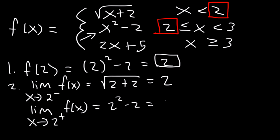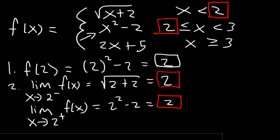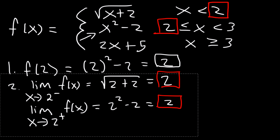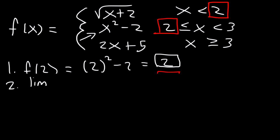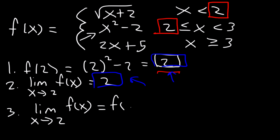Because the left-side limit and the right-side limit are the same, the limit exists. The limit as x approaches 2 from either side of f of x equals 2. Notice these two values are the same, so for step 3, the limit as x approaches 2 of f of x equals f of 2, since they both equal 2. Therefore, the function is continuous at x equals 2.